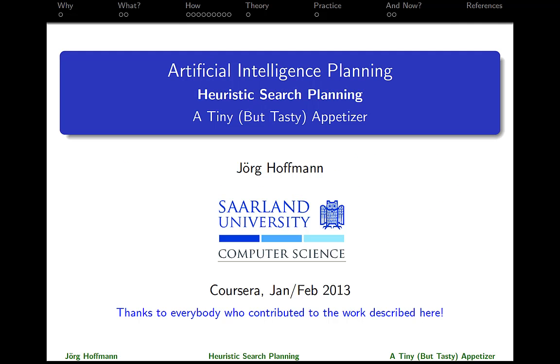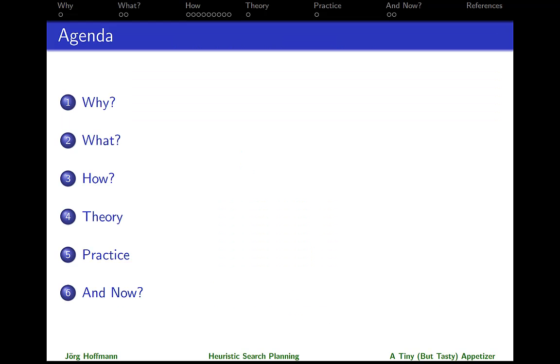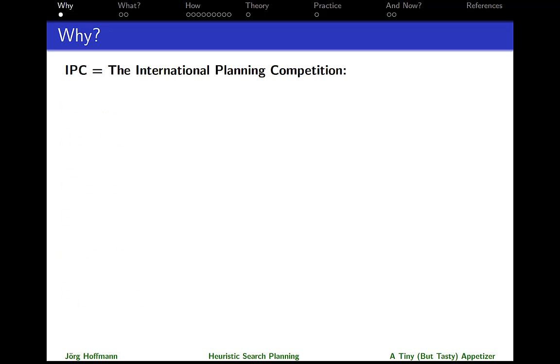That is one of the most prominent sub-areas of planning, and I'm going to give you only a very brief overview in the little time I have. So here's the outline. I'm going to start with why. Why do we want to consider heuristic search planning? One possible motivation is the International Planning Competition, IPC. The first edition was run in 1998. Let me start with the second edition in the year 2000, where the clear winner was based on heuristic search.